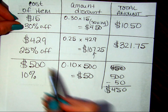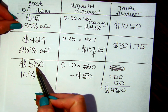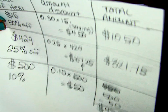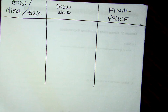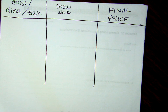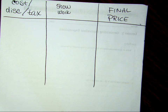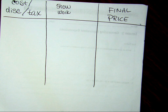So the most important thing for you to know is that first you find the discount and you subtract it. You then use that new amount to find the sales tax of that, and then add it.